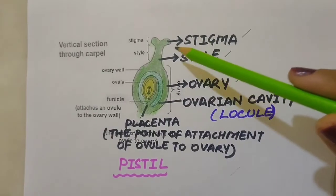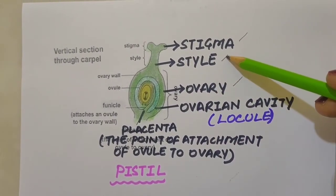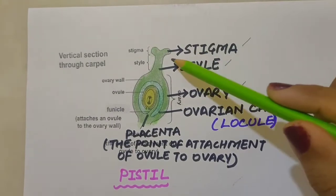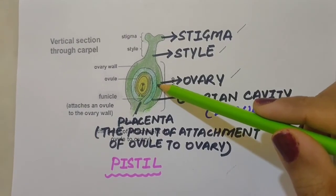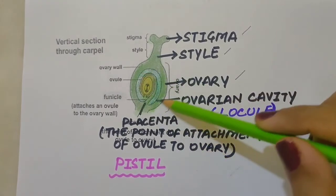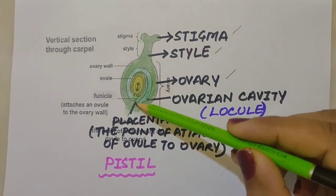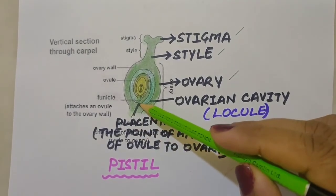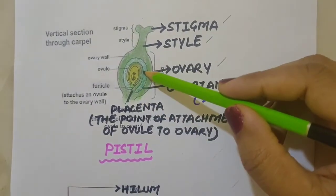Each pistil has mainly three parts: stigma, style and ovary. The stigma serves as a landing platform for pollen grains. The style is the elongated slender part beneath the stigma. The basal part of the pistil is the ovary. Inside the ovary is an ovarian cavity, also called the locule. The placenta is located inside the ovarian cavity and is the point of attachment of the ovule to the ovary. Arising from the placenta are the megasporangia, commonly called ovules.